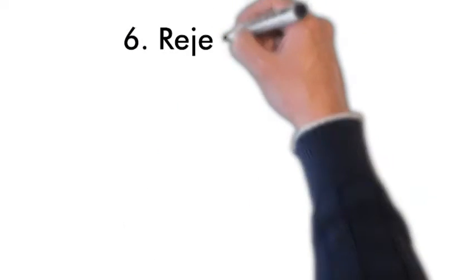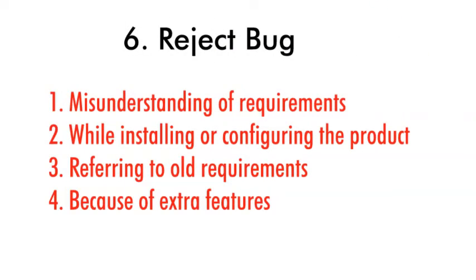The first uncommon stage is reject the bug. When the test engineer sends the defect report, the development lead can reject the bug. A bug can be rejected because of misunderstanding — if the test engineer misunderstood some requirements and raised a bug incorrectly. It can also be rejected if the product was wrongly configured or installed and a bug was found due to that improper setup.